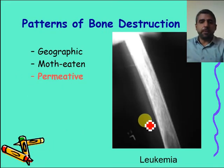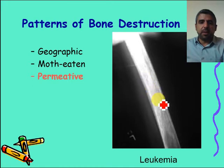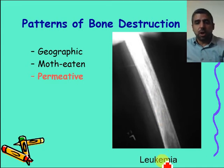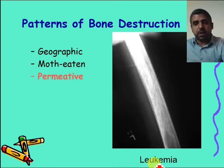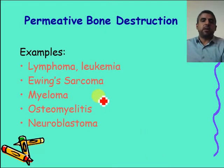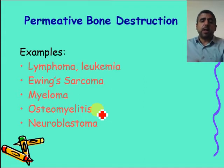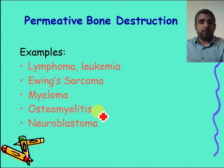For example, you can see this bone — the medullary cavity is abnormal, with multiple linear-like lucencies and wormholes, as if a worm is crawling inside the bone. This is permeative bone destruction. This was a case of leukemia. Tumors most commonly producing permeative destruction include lymphoma, leukemia, round cell tumors like Ewing sarcoma, myeloma, and osteomyelitis — though that is not a tumor. Neuroblastoma also causes permeative bone destruction.